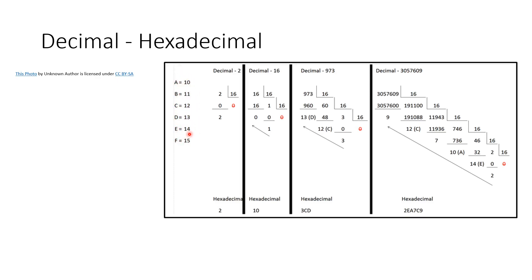You get residuals, for example in this one: 973 gives 13, 12. You have to translate these to letters, so here is 3CD.